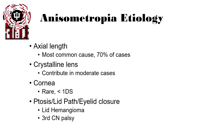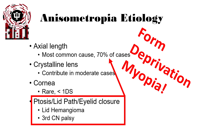Typically, most cases of anisometropia are due to axial length. Sometimes the crystalline lens can contribute to some cases. Rarely is the cornea involved without trauma or surgery. And finally, ptosis, lid pathology, or eyelid closures can cause axial length changes as well — through form deprivation, which can induce anisometropia.